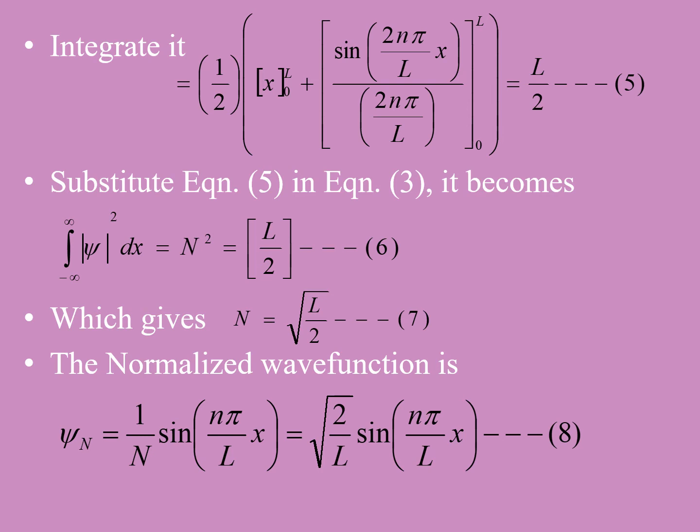So the integral of |psi|² dx, which equals N², is equal to L/2. Therefore N equals the square root of L/2. The normalized wave function is then psi = √(2/L) sin(nπx/L).